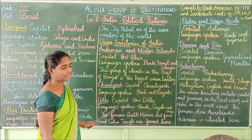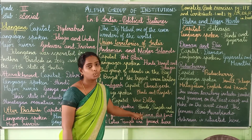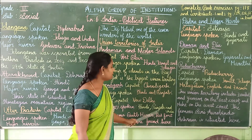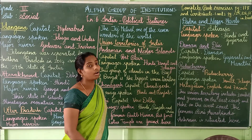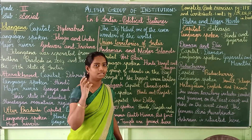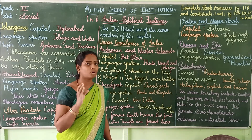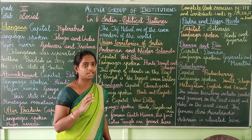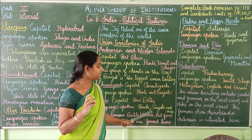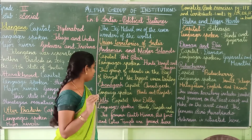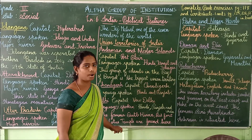Delhi's capital is New Delhi. Its languages spoken are Hindi, Punjabi, and Urdu. New Delhi is the main capital of India, where Parliament and all government functions are based. Famous landmarks include Qutub Minar, Red Fort, and the Lotus Temple.